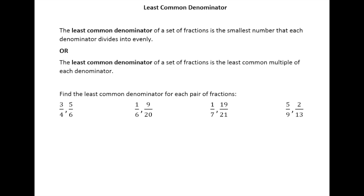So we're looking for the smallest number that each bottom number of a fraction goes into evenly. The other way you could say this same definition is that the least common denominator of a set of fractions is the least common multiple of each denominator. So that brings in this concept of least common multiple that we worked on in section 3.1.